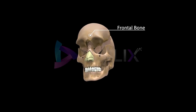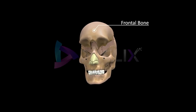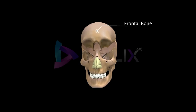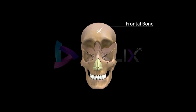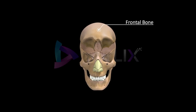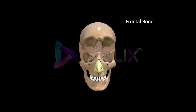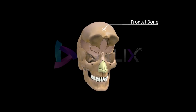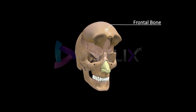Frontal bone: It forms the forehead, the anterior part of the cranial floor, the roof of the orbits, and a part of the bony part of the nose.